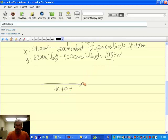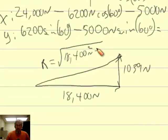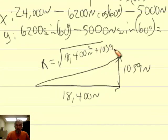My y component, again, it's positive, so I'm going in the positive y direction. Well, that's 1,039 newtons. So my resultant, well, that's the hypotenuse of this triangle. Well, that's easy to find. R here, the resultant, it's just the square root of 18,400 newtons squared plus 1,039 newtons squared. The square root of that's going to be the resultant.